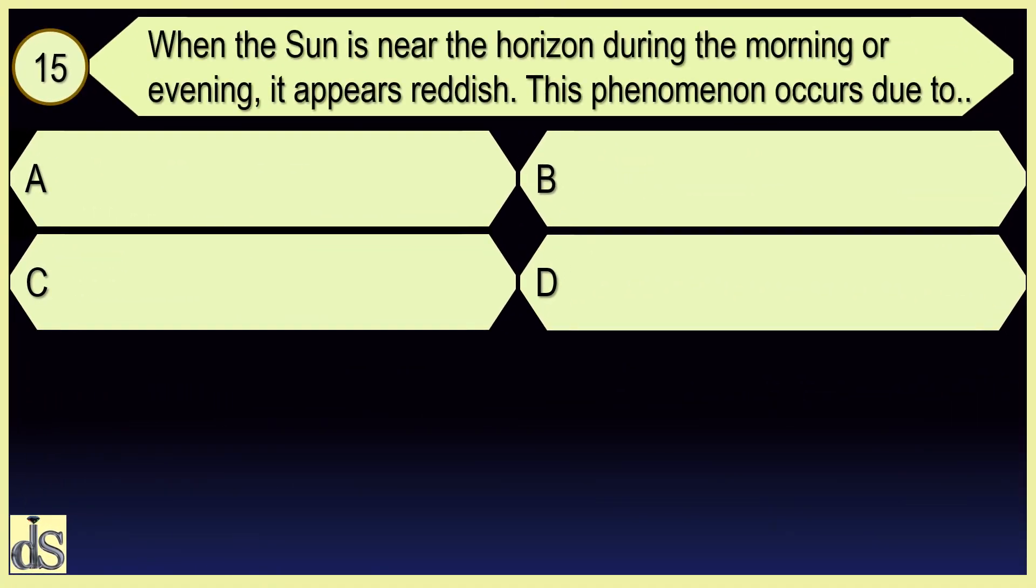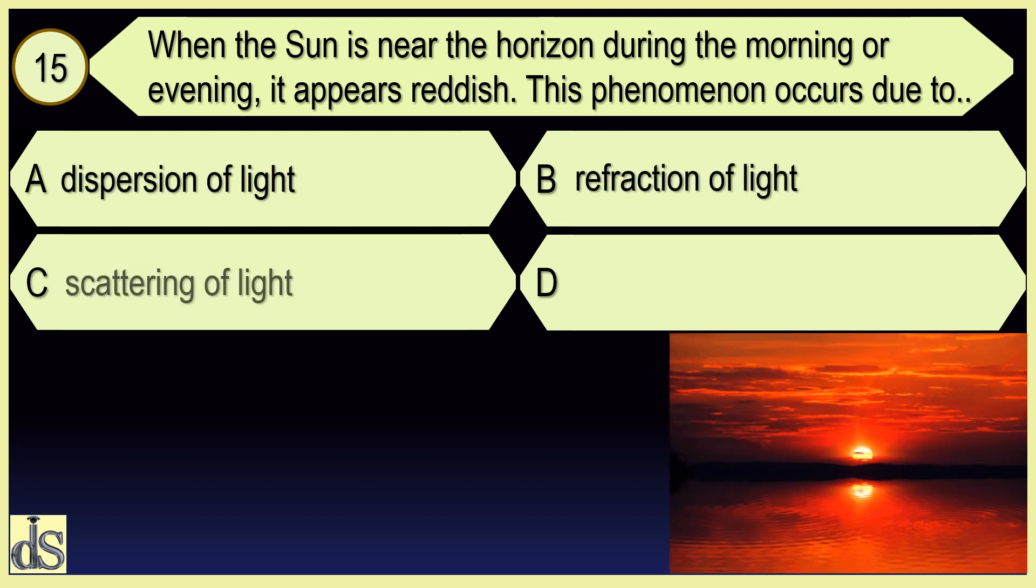When the sun is near the horizon during the morning or evening it appears reddish. This phenomenon occurs due to scattering of light.